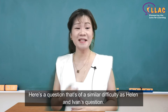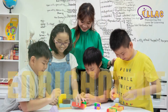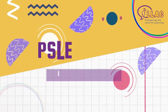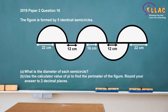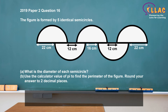Here's a question that's of a similar difficulty as Helena Ivins' question. The figure is formed by five identical semicircles. Part A: what is the diameter of each semicircle? Part B: use the calculator value of pi to find the perimeter of the figure. Round your answer to two decimal places. In order to finish the entire paper, leaving some time for checking, you should finish this question under four minutes. Pause the video and get doing!